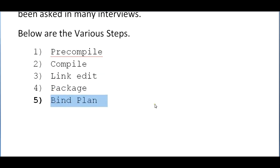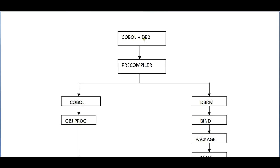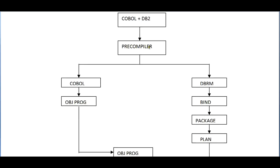Initially we give our COBOL plus DB2 program as input to the pre-compiler. It will identify the DB2 statements separately and load them into a DBRM, and it creates a separate source code. The pre-compiler expands all the copy books and replaces the DB2 statements with COBOL call statements, separating the DB2 SQL from the COBOL code.